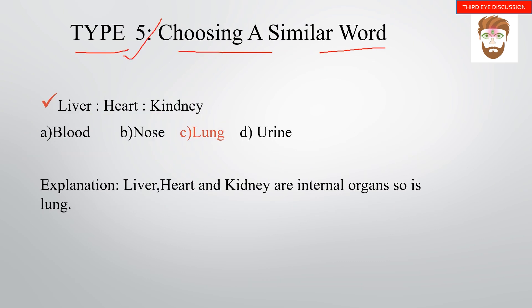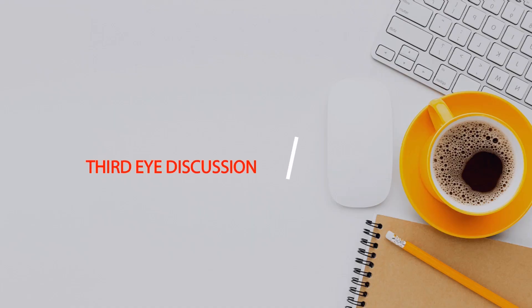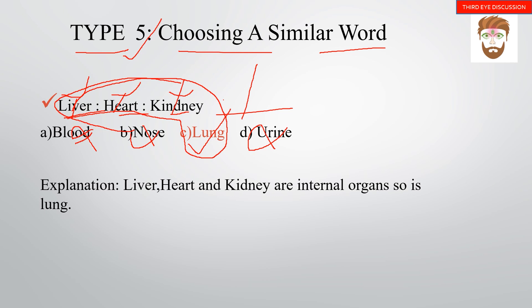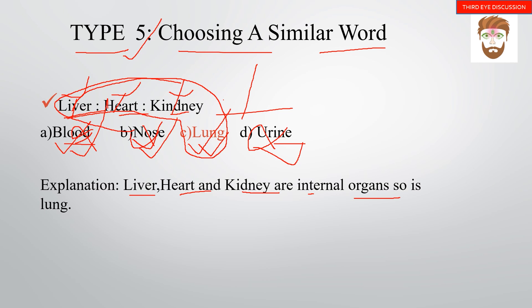Type 5 is choosing a similar word. For example, given the words: liver, heart, kidney, blood, nose, urine, lungs — you need to find which do not belong. Blood is a fluid, urine is a fluid, and nose is an external organ, so liver, heart, kidney, and lungs are all internal organs.